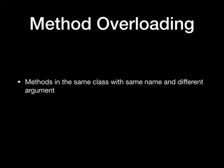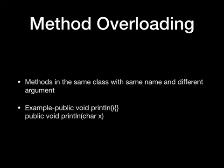Method overloading means providing two separate methods in the same class with the same name but different arguments. The method return type may or may not be different, which allows us to reuse the same method name. For example, we have the system.out.println method that accepts all primitive object types and prints them.